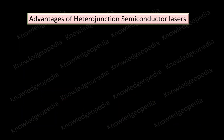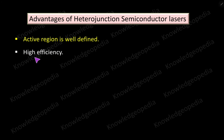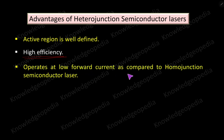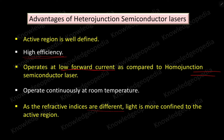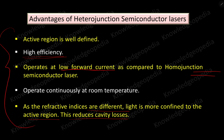The advantages of heterojunction semiconductor laser over homojunction semiconductor laser are: the active region is well defined; almost all light is confined to the active region, so loss is very minimal and efficiency is very high; it operates at low forward current; it operates continuously at room temperature; and because the refractive indices are different, light is more confined to the active region, reducing cavity loss.